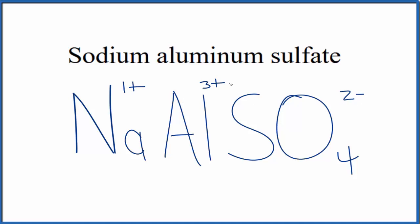What we can do is put parentheses around this sulfate here and put a subscript of 2 out here. Two times 2 minus, that's 4 minus—that'll balance out the 4 plus here.